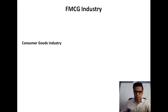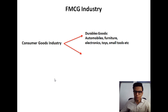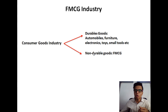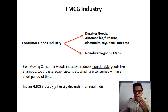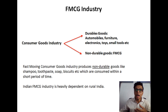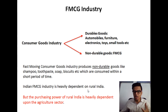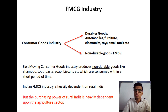If you look at the Indian FMCG industry — Fast-Moving Consumer Goods — this industry produces non-durable goods like shampoo, toothpaste, soap, biscuits, etc., which are consumed within a short period of time. The Indian FMCG industry is heavily dependent on rural India. If the demand in rural India is not good, this industry suffers, and the purchasing power of rural India is heavily dependent on the agriculture sector. This means the Indian FMCG industry is ultimately dependent on the agriculture sector. So it is indeed true that all sectors of the economy are interrelated.